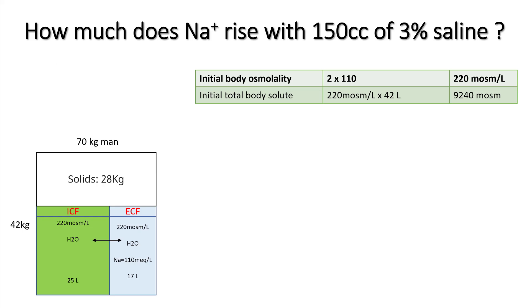The commonest concern about giving hypertonic saline is rapid correction. Let's calculate whether 150 cc's of hypertonic saline really results in rapid correction. We'll take a 70 kg person with total body water of 42 liters, 25 liters in ICF and 17 liters in ECF, and a sodium of 110. Initial body osmolality is 220, and initial body solute is 220 × 42 = 9240.